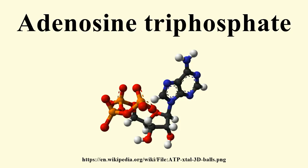These cellular processes include biosynthetic reactions, motility, and cell division. One molecule of ATP contains three phosphate groups, and it is produced by a wide variety of enzymes, including ATP synthase, from adenosine diphosphate or adenosine monophosphate and various phosphate group donors.